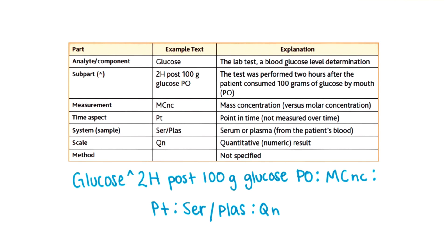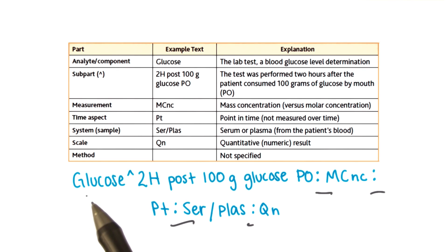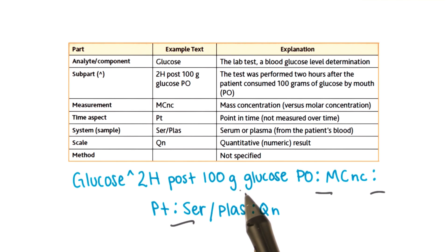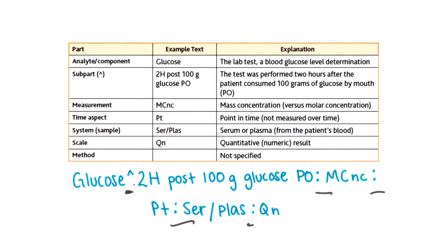While the codes themselves are deceptively simple, they contain a lot of information detailed in their names, which, as shown here, are divided into five or six main parts separated by colons. In this example, the first part contains the analyte, or substance of interest, which is glucose. We can see that it was determined two hours after the patient consumed 100 grams of glucose, because the first part of the name is divided into subparts separated by a carat.